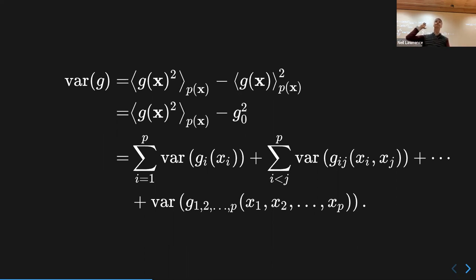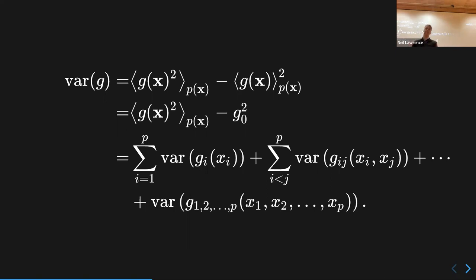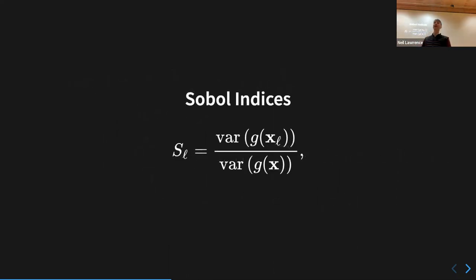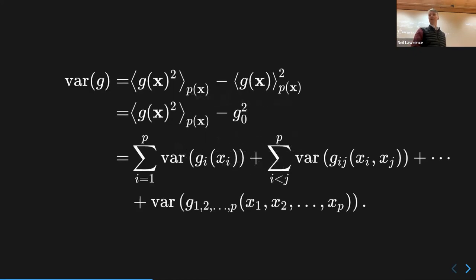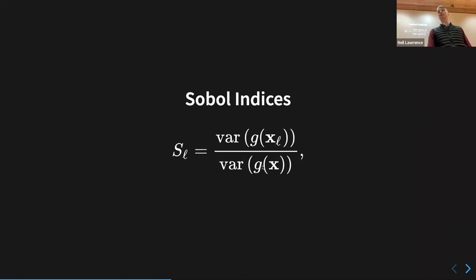Quick intuition check: what would this decomposition look like for a linear function? It would just be the first-order terms — all interaction terms would be zero. For a quadratic function the second-order terms would exist and the rest would be zero. The Sobol indices are the variance of each individual component divided by the total variance — they sum to one, so each index tells you the relative contribution.